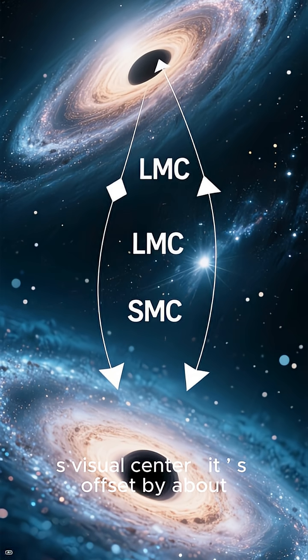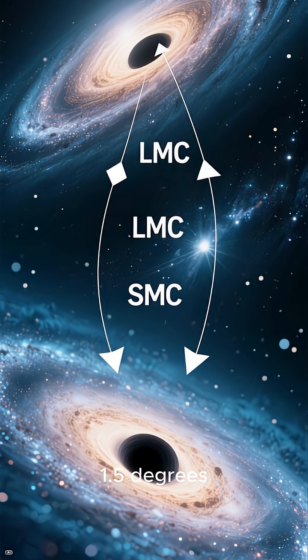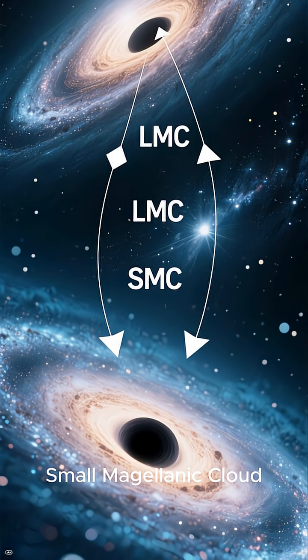It's not at the galaxy's visual center. It's offset by about 1.5 degrees, likely pulled off center by gravitational chaos from the Small Magellanic Cloud.